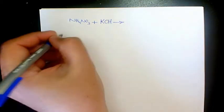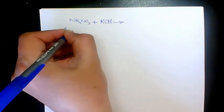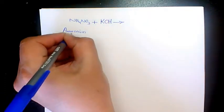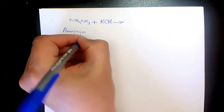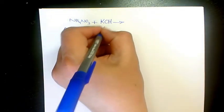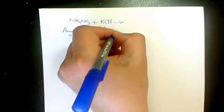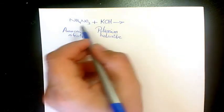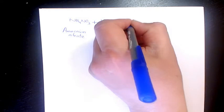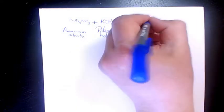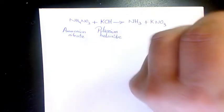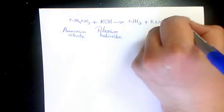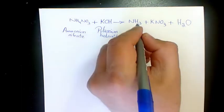NH4NO3 is ammonium nitrate and KOH is potassium hydroxide. When they react together, they produce NH3, KNO3, and H2O.